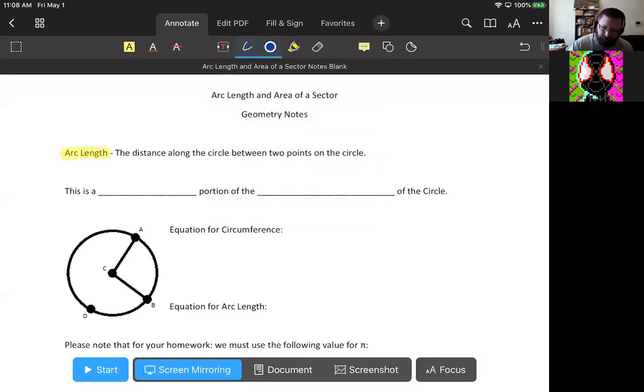Arc length is exactly what it sounds like. It's the distance along the circle between two points on the circle. It's the length of an arc.